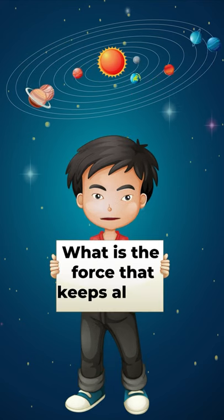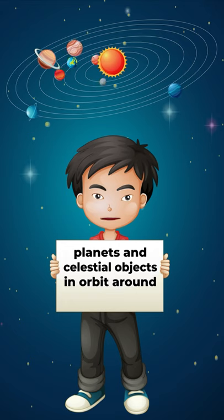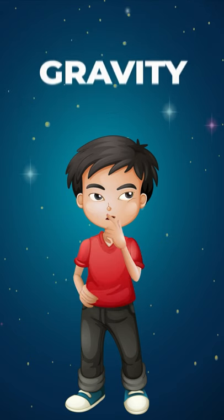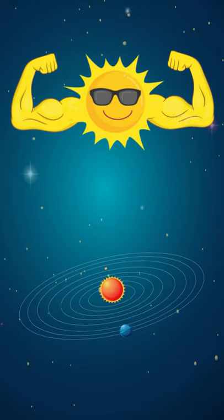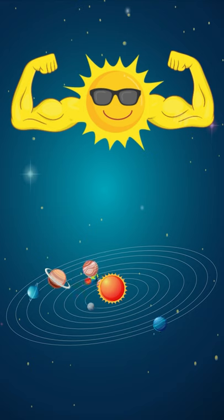What is the force that keeps all the planets and celestial objects in orbit around the sun? The answer is gravity. Yes, you heard it right. The sun has a strong gravitational force which is controlling the orbit of planets and making all the planets revolve around it.